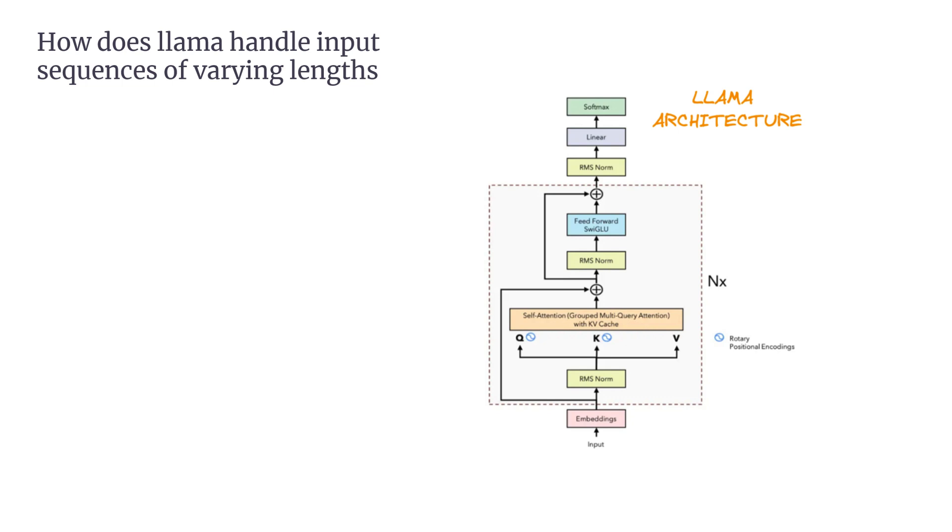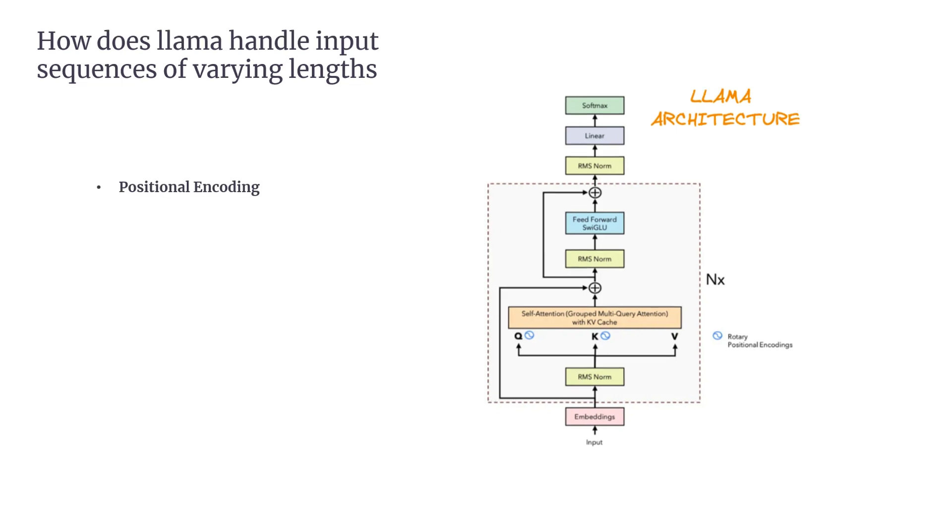Now let's explore how LLAMA models efficiently handle input sequences of varying lengths, using a range of techniques to process everything from short prompts to long documents. LLAMA uses rotary positional embeddings instead of traditional sinusoidal positional encodings. This approach allows LLAMA to better generalize to longer sequences, even if trained on shorter contexts. RoPE provides a more flexible way to capture positional information, especially for longer sequences beyond the model's original training length. RoPE enables LLAMA to adjust its attention mechanism based on relative distances between tokens. This dynamic adjustment reduces the computational cost of processing long sequences, making it much more efficient.